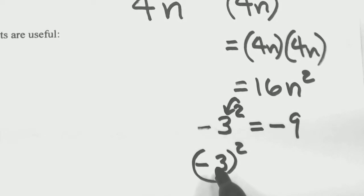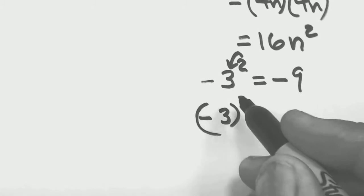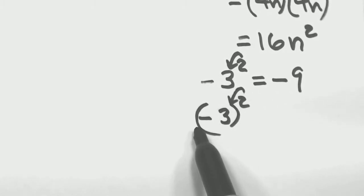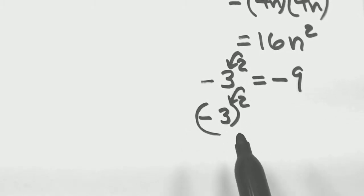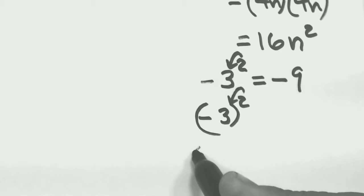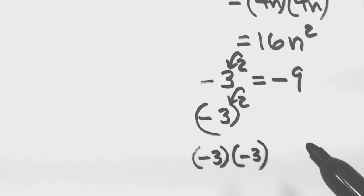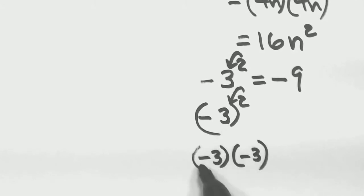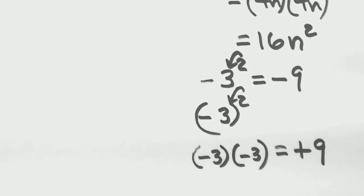Now this second case is different: if you have negative 3 in parentheses and you're squaring it, the power is only affecting the guy immediately in front — which is the parentheses. So we've got negative 3 times negative 3. The two minus signs combine to give a plus, so the answer is positive 9.